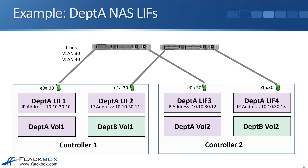This is either NFS or CIFS — it doesn't really matter which one. For our configuration, Department A's first LIF has IP address 10.10.30.10 on interface E0A.30, which is a VLAN interface for VLAN 30 traffic hitting the E0A physical port. LIF 2 is 10.10.30.11 on port E1A.30, then 10.10.30.12 on E0A.30, and 10.10.30.13 homed on E1A.30. That gives access to Department A volume 1 on node 1 and Department A volume 2 on node 2.